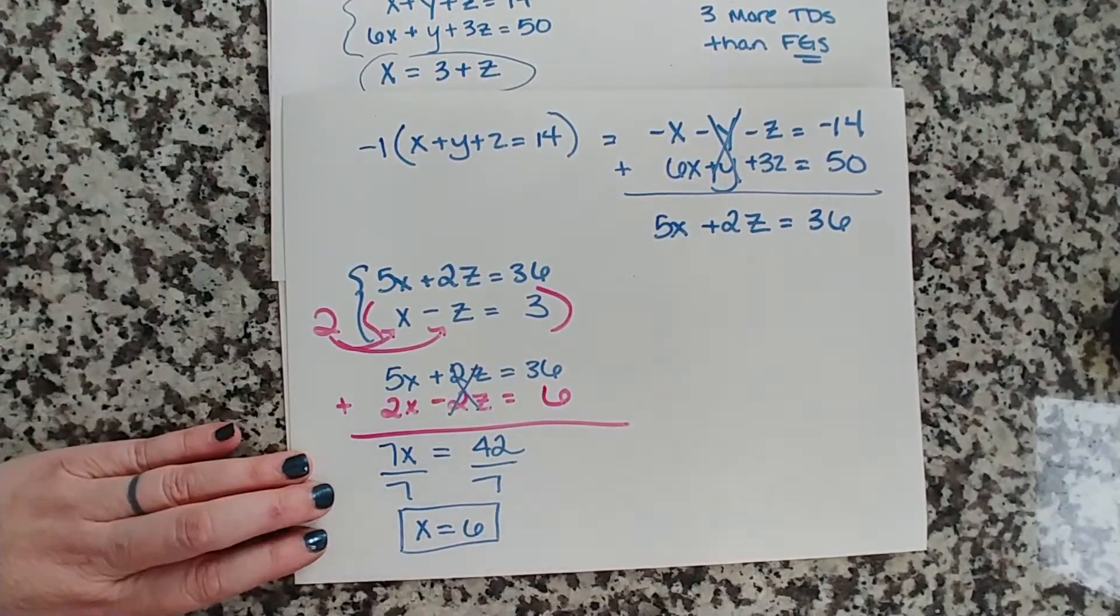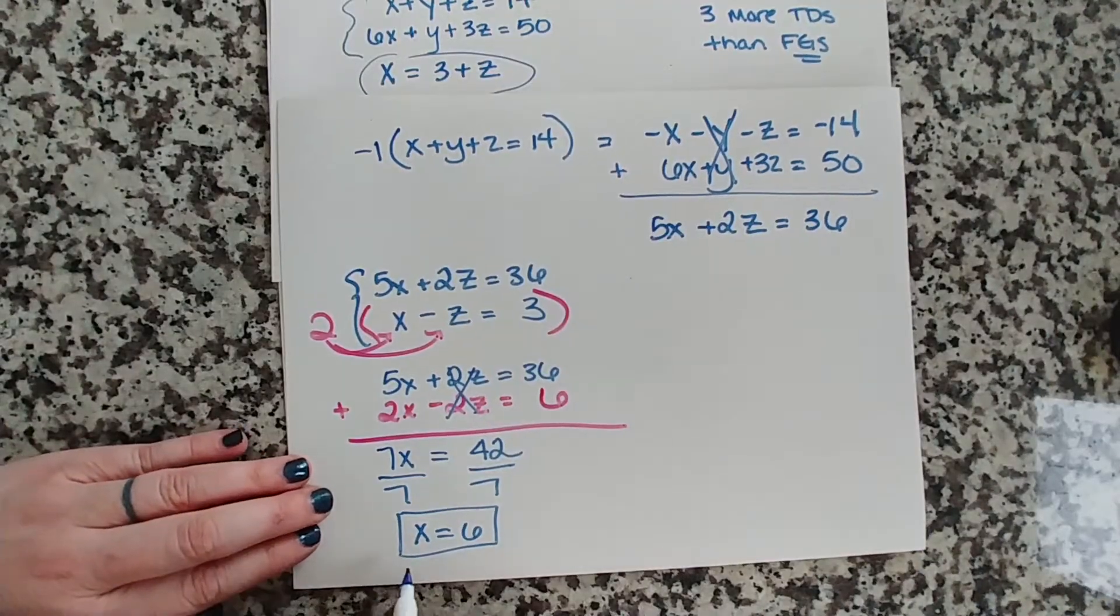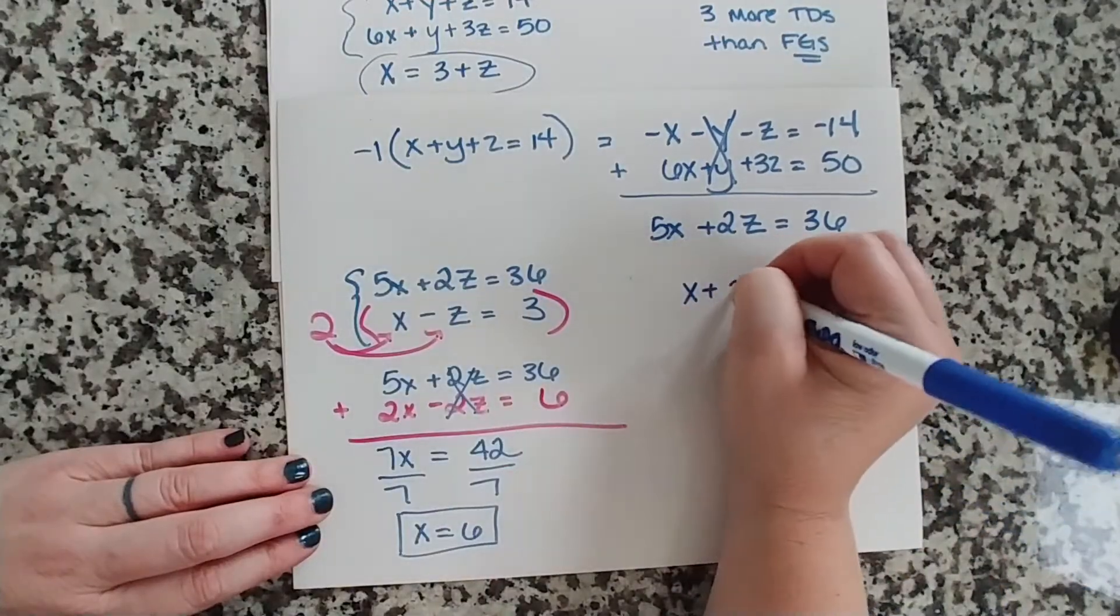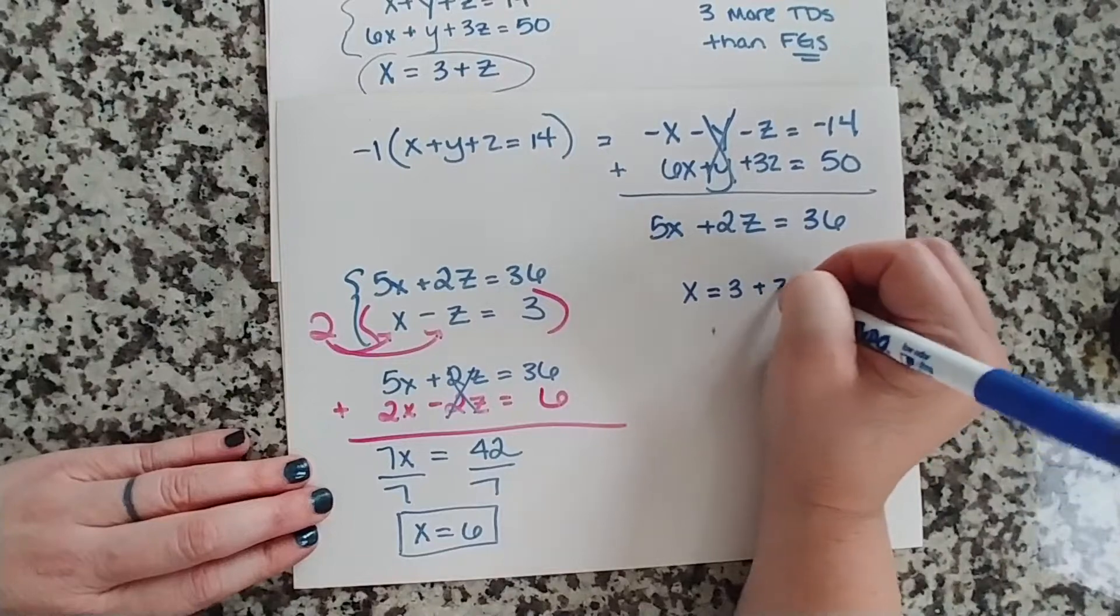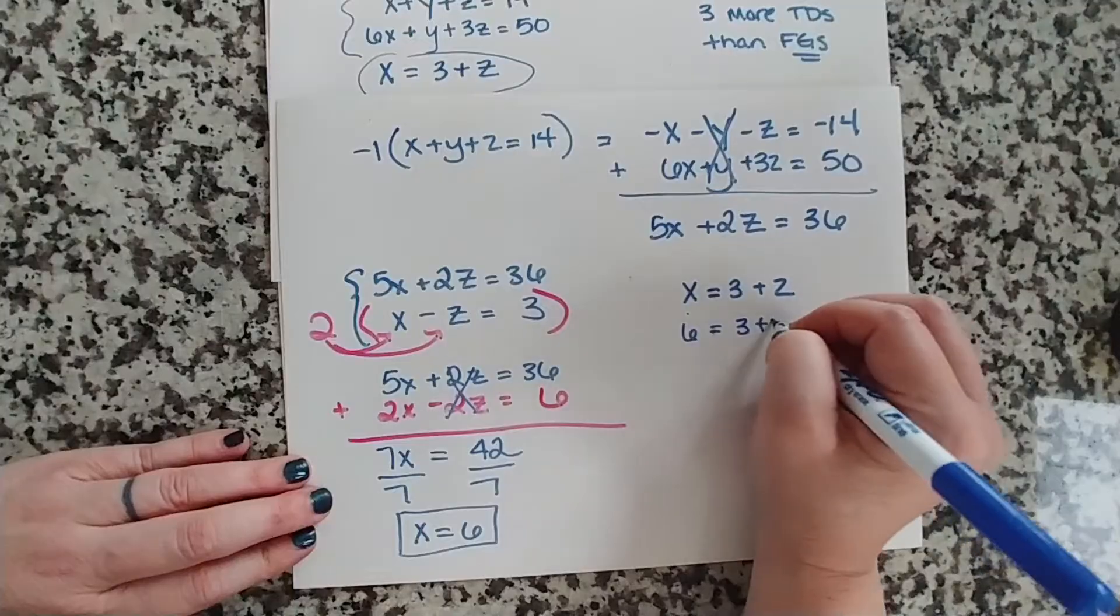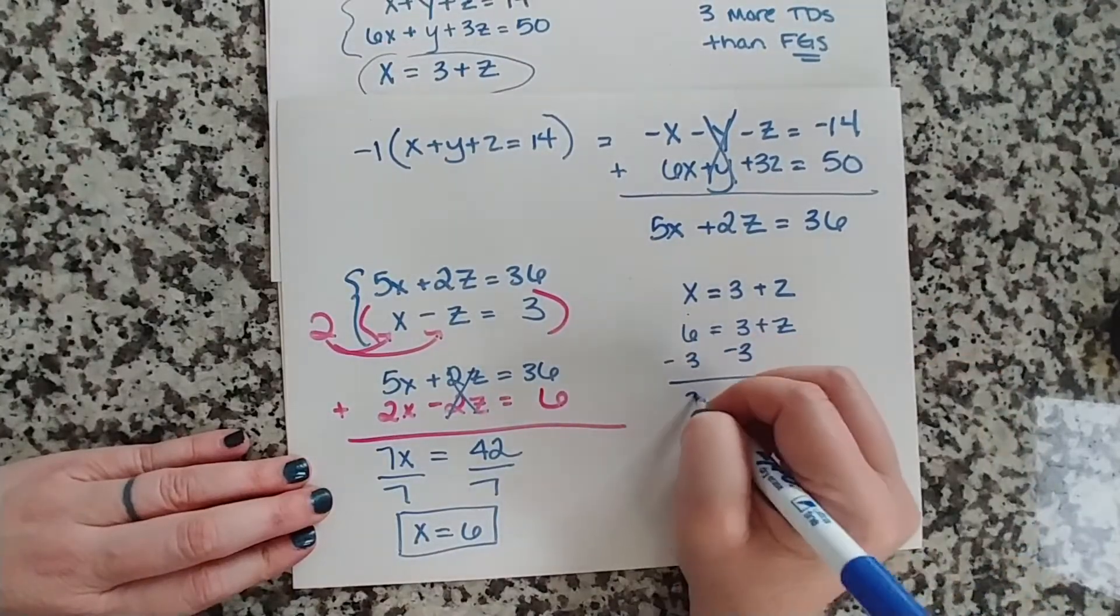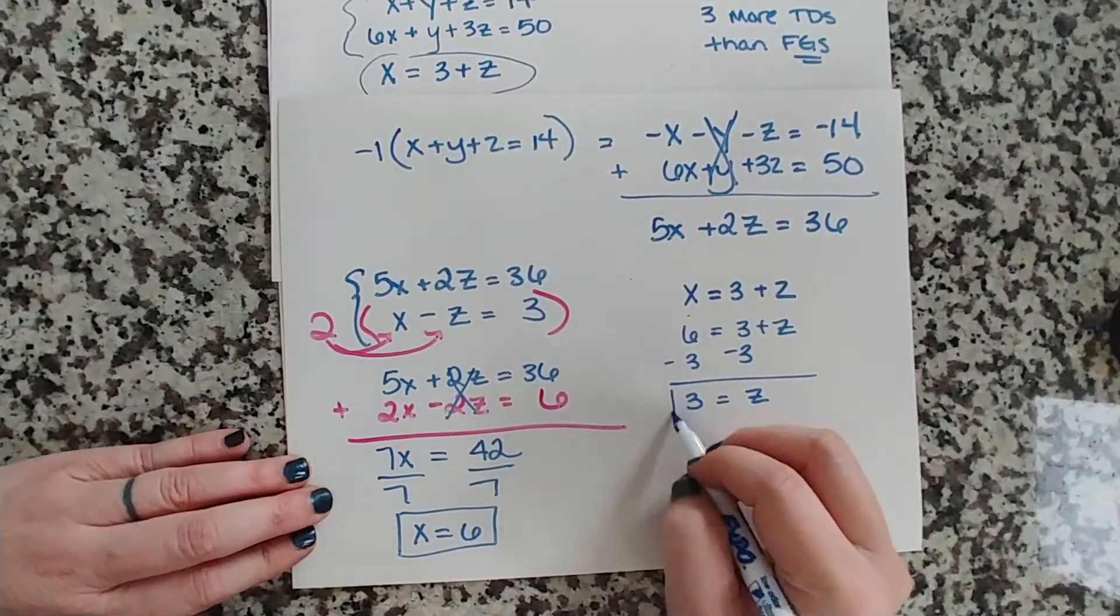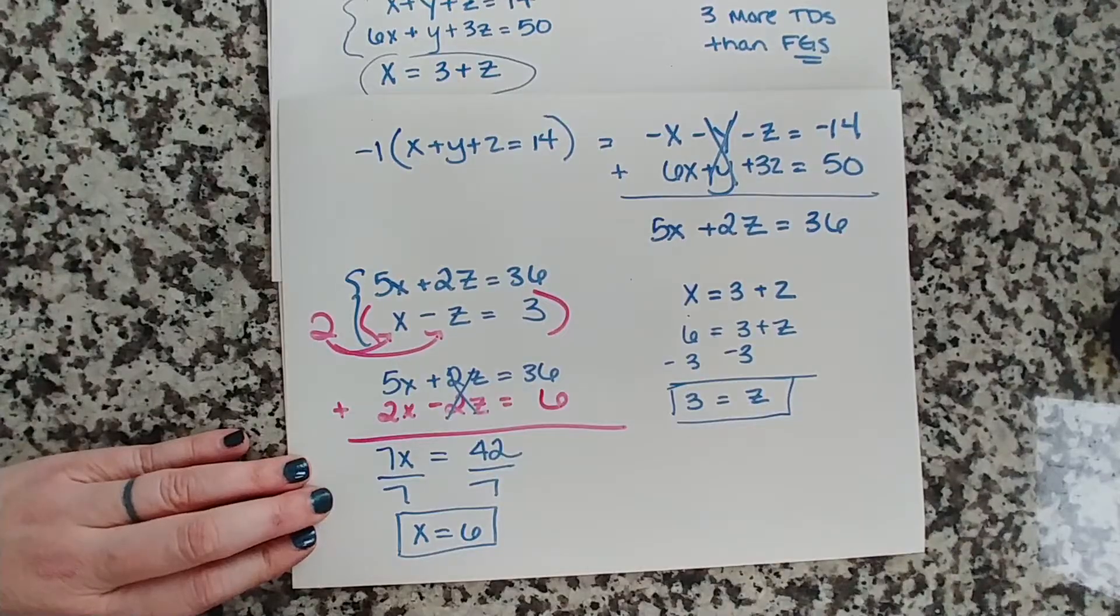So we know that they scored 6 touchdowns. Pretty good game. So we can now take the 6 touchdowns and use this equation, X equals 3 plus Z, and put in our known value. We know X is 6, so 6 equals 3 plus Z. We subtract 3 from both sides, and we get Z equals 3. So now we know that Z equals 3 and X equals 6.